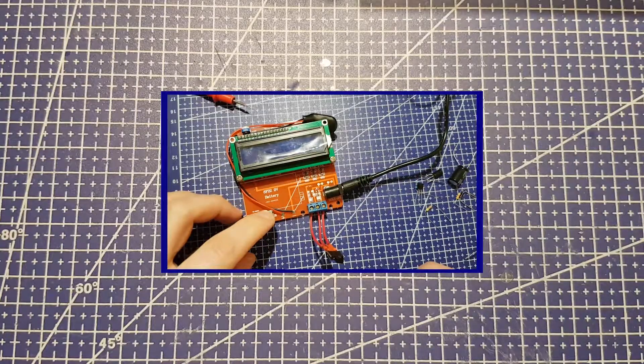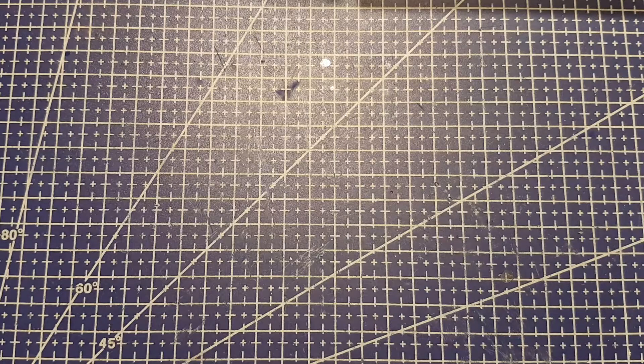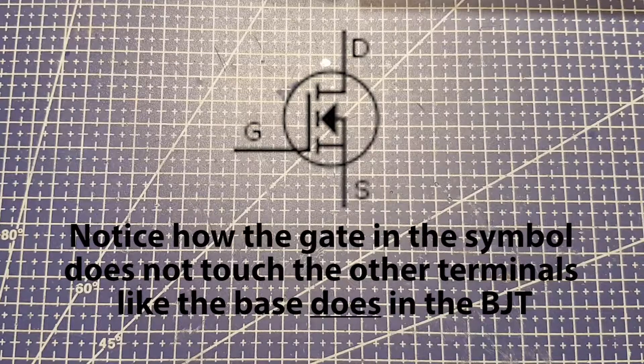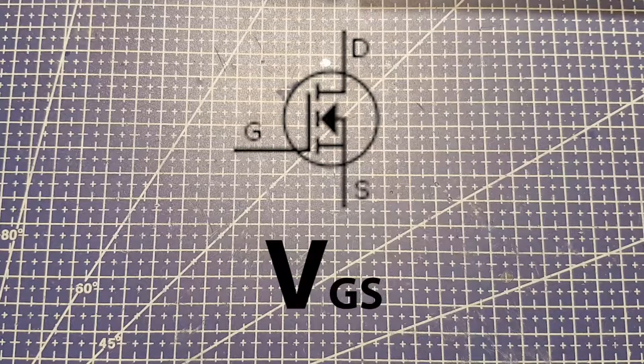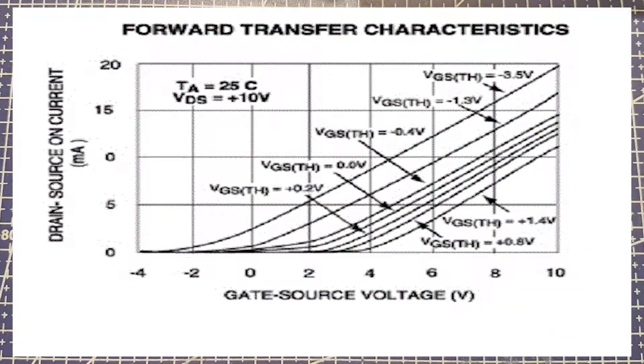So back to the MOSFETs and the JFETs. These transistors are not activated by current. The gate is not physically connected inside the body of the transistor. They are activated by a voltage potential. The potential across the gate and the source. Now with the MOSFETs and the JFETs, what's actually happening is as you increase the voltage potential, the resistance in the path of drain to source is changing. So the voltage potential goes up, the resistance goes down. So more current flows.